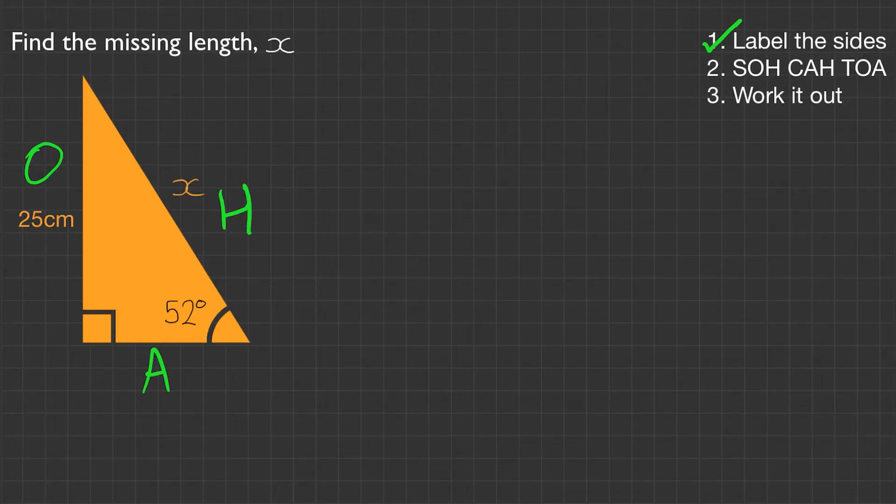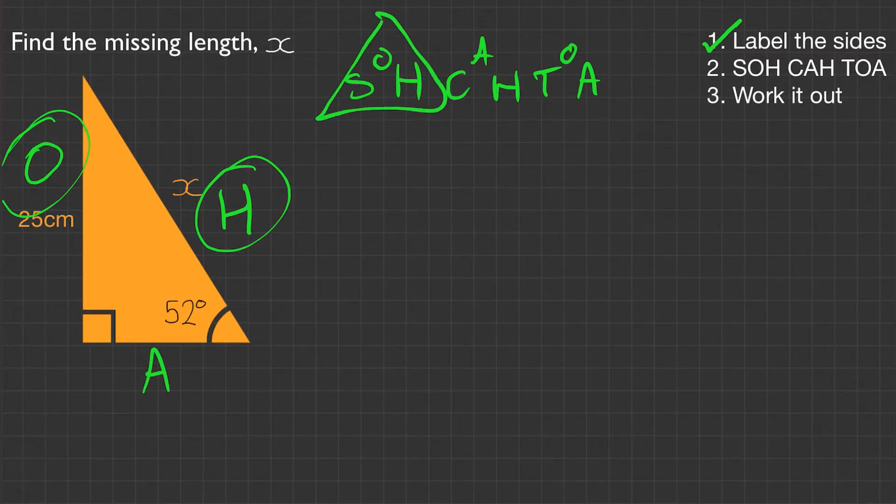We'll move on to step two, SOH CAH TOA. Now, I always write SOH CAH TOA like this up and down, up and down. Again, I explained in a previous video why to do this. Let's find out which of these we need. We need to find the hypotenuse and we have information on the opposite side. So we have the opposite and the hypotenuse, therefore we're going to be using SOH.